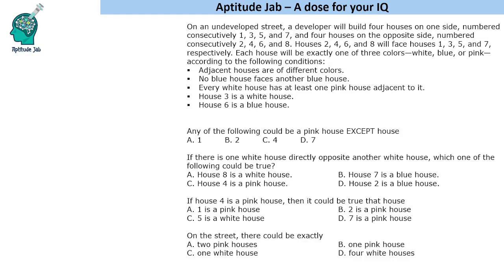This is a condition-based LR set. There is a street with 8 houses — 4 houses on one side and 4 on the other. The houses are numbered 1, 3, 5, 7 on one side, and the opposite side is numbered 2, 4, 6, 8, so that 2, 4, 6, 8 are opposite 1, 3, 5, 7 respectively. The houses are to be colored using 3 different colors: white, pink, and blue.